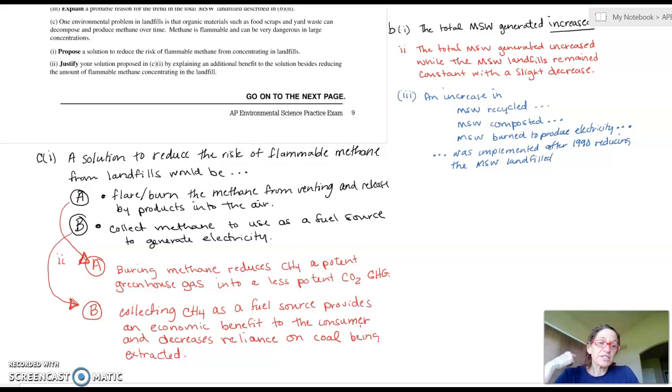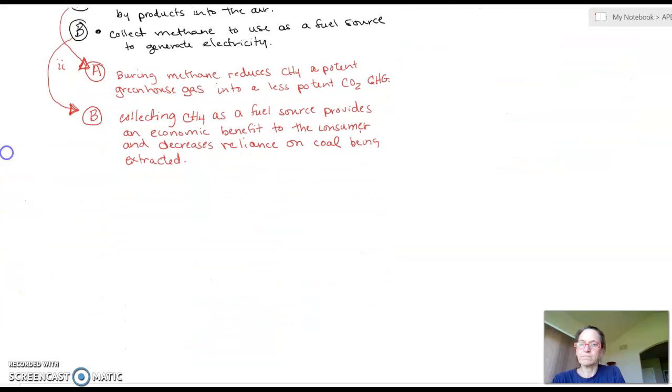Then going on to two, it's just asking you to justify your solution that you propose. If we went with the two solutions that I shared, if we're going to flare and burn, burning methane reduces methane, which is a potent greenhouse gas, into a less potent carbon dioxide greenhouse gas. So that would be your justification as to why you would do that. Or if you're going to collect it to use as a fuel source, collecting methane as a fuel source provides an economic benefit to the consumer and decreases reliance on coal being extracted. You're just justifying why the thing you proposed actually does make sense.